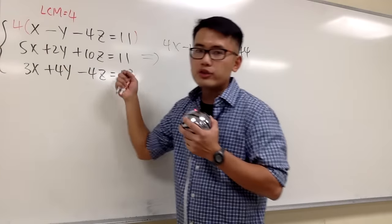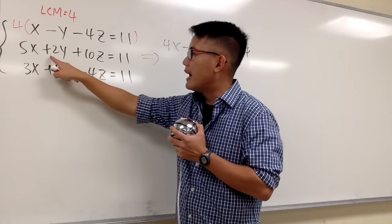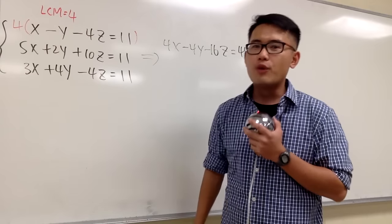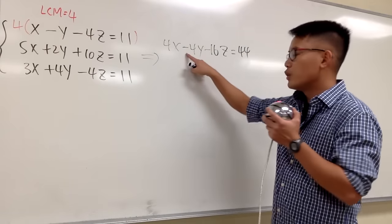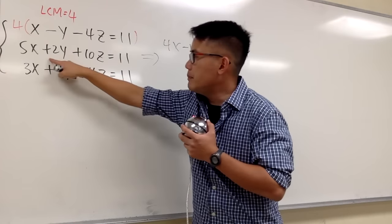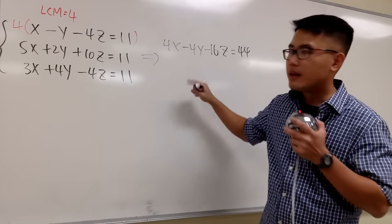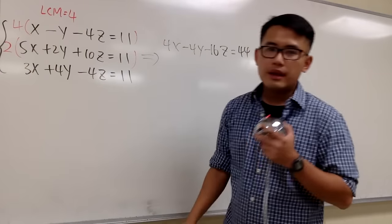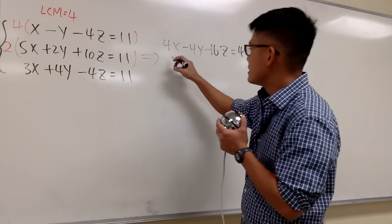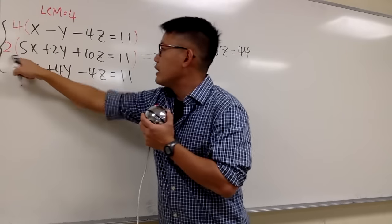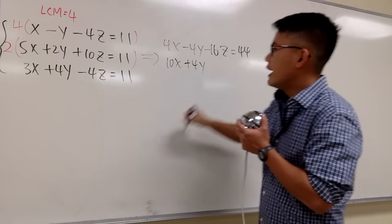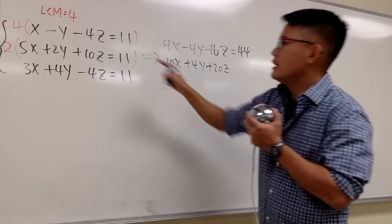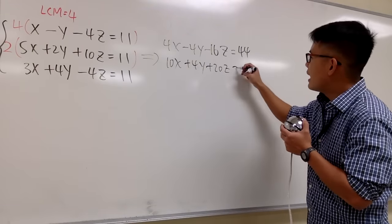And then we look at the second equation. We have a positive 2 in front of the y. 2 times 2 will give us 4. And you see, earlier we have a negative 4y, so we should keep this to be positive 4y, and I'm going to multiply by positive 2. We will see 2 times 5x is 10x, 2 times 2y is plus 4y, and then 2 times 10z is plus 20z, and then 2 times 11 gives us positive 22.